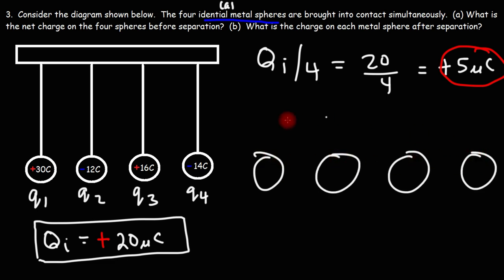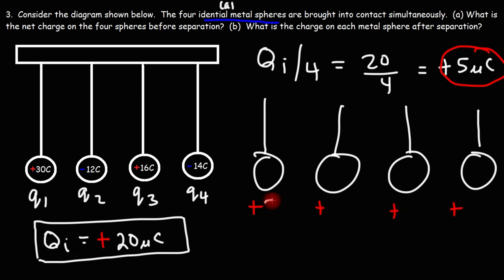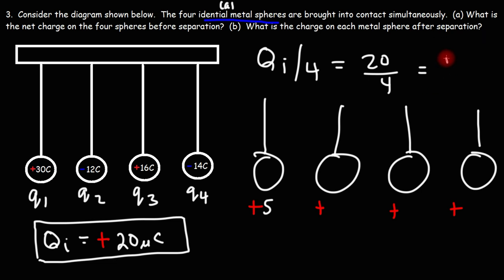If we draw a new picture after the charges are separated, each sphere will have a charge of +5 microcoulombs — not microclumbs, that should be microcoulombs. If you add 5 four times, you get 5 times 4 which is 20. So that's it for this video — now you know how to solve problems associated with the conservation of electric charge.